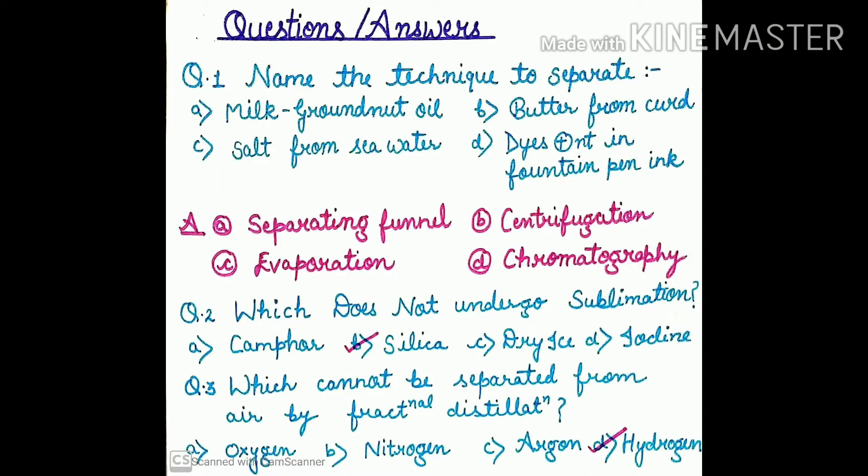Hello everyone, welcome to Chemistry Chat Chat. This is part number 12. In this we will discuss some question answers of this particular chapter, that is 'Is Matter Around Us Pure?' Question number one: name the technique to separate milk and groundnut oil, butter from the curd, salt from the seawater, and the dye present in fountain pen ink.